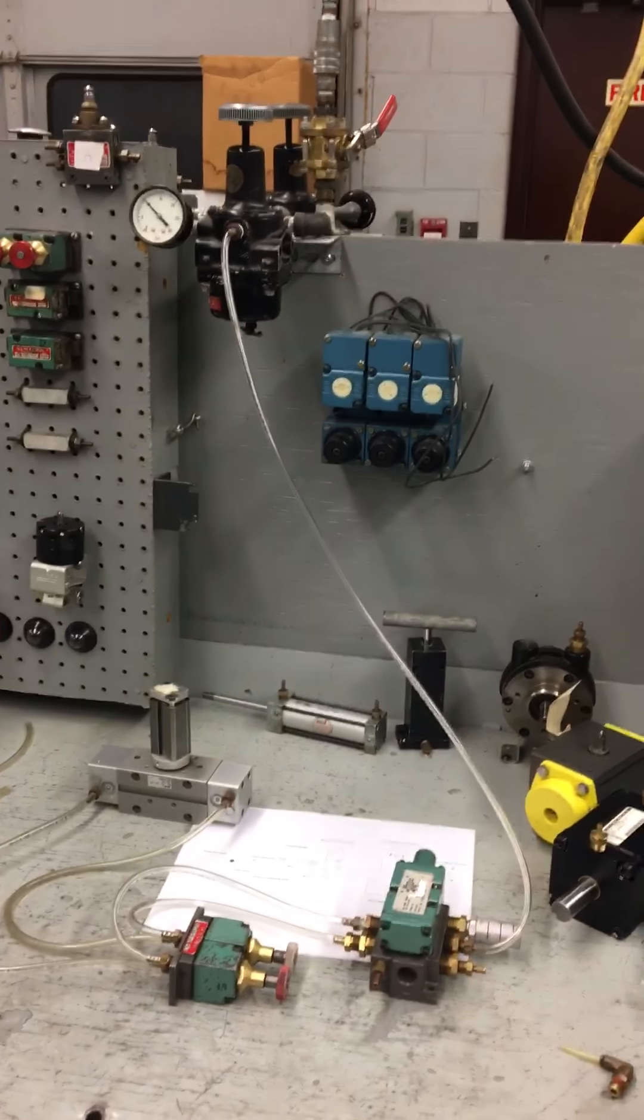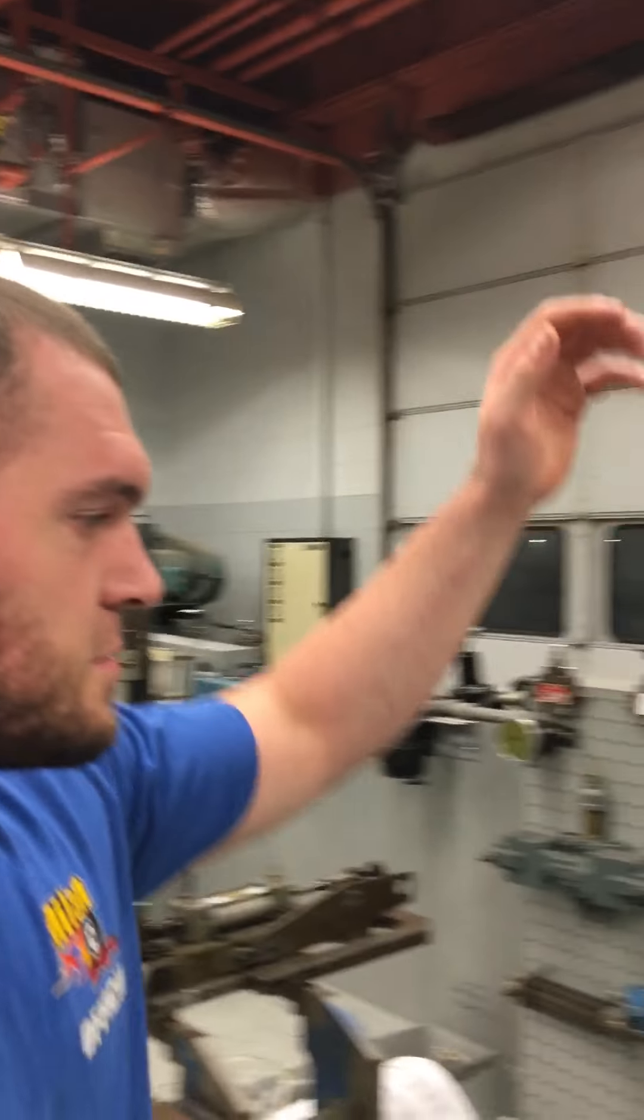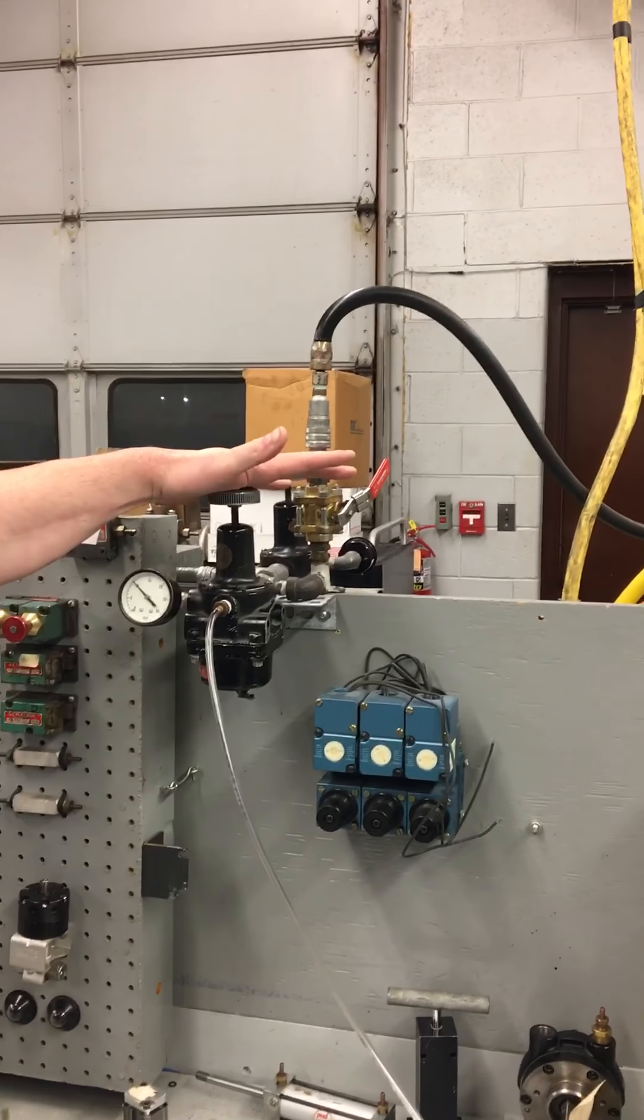All right, I'm John with Chance here to show you how a pneumatic circuit works with a semi-rotational actuator. Over the corner we have our air source as a compressor. It feeds the air lines over here to our pressure reducing valve.